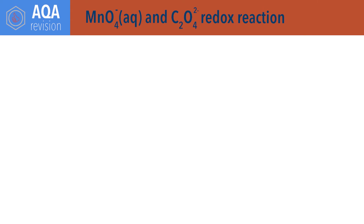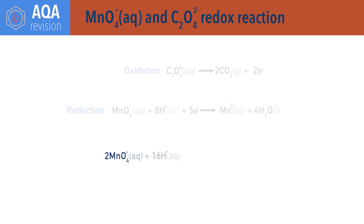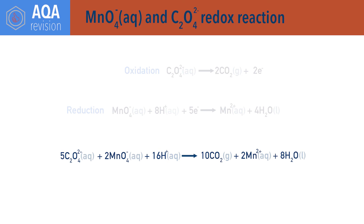Permanganate ions, MnO₄⁻, react with ethanedioate ions, C₂O₄²⁻, in acid solution. Ethanedioate ions get oxidised to carbon dioxide: C₂O₄²⁻ → 2CO₂ + 2e⁻. The permanganate ions get reduced to form Mn²⁺ ions: MnO₄⁻ + 8H⁺ + 5e⁻ → Mn²⁺ + 4H₂O. Combining the two half equations gives: 2MnO₄⁻ + 16H⁺ + 5C₂O₄²⁻ → 10CO₂ + 2Mn²⁺ + 8H₂O. The reaction requires acid and is an example of autocatalysis, as the Mn²⁺ ions formed can act as catalysts themselves to further speed up the reaction.